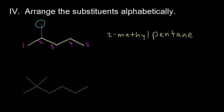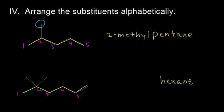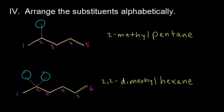Let's do another one. Find the longest carbon chain and name it — that would be six carbons, so hexane. Number to give your substituents the lowest number possible; numbering from the left gives the lowest numbers. I have two methyl groups this time, so I use the prefix di: dimethyl. Both methyl groups are coming off of carbon two, so the name is 2,2-dimethylhexane.